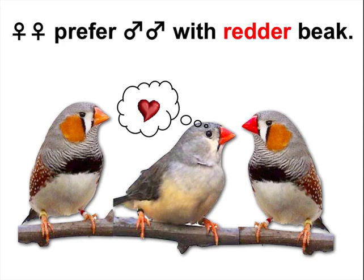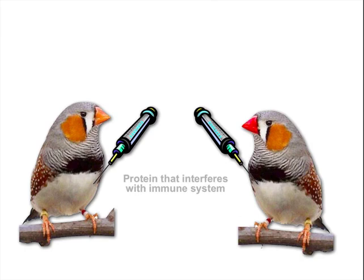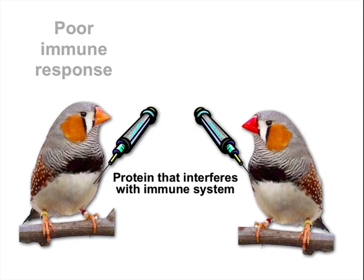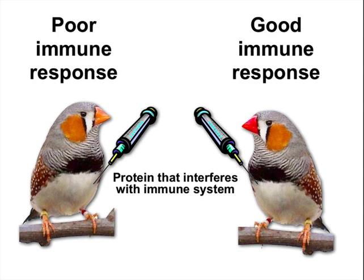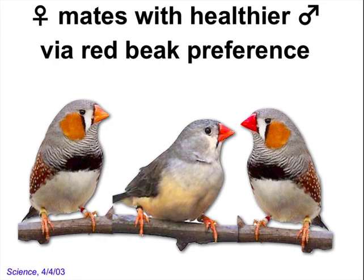The authors went one further step — a very important one — by injecting a protein into these males that interfered with their immune system. It turns out that the males with the paler beak became rather unhealthy; they became ill and had a poor immune response. But the ones with the redder beak remained pretty healthy. So the net result is that the females ended up with healthier mates simply by preferring to mate with the ones with the redder beak. That's what this article was all about, and that's how I go about presenting it in class.